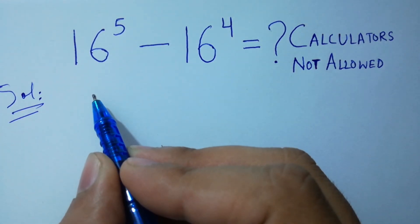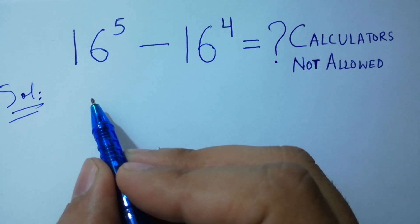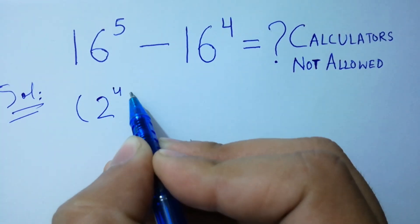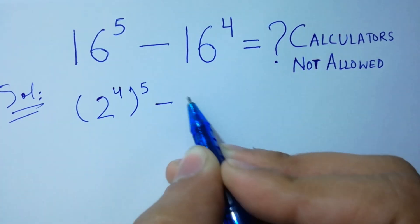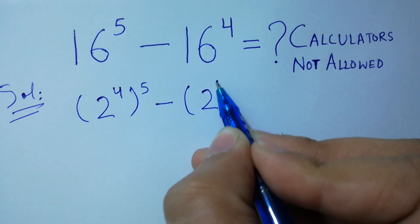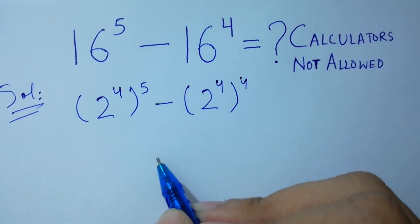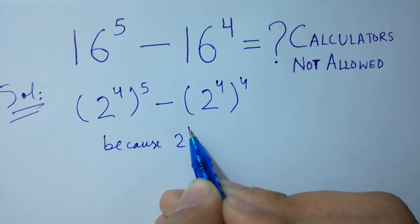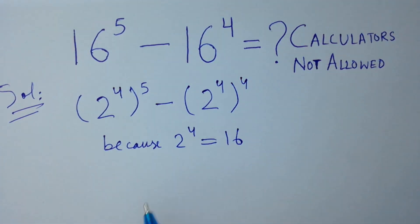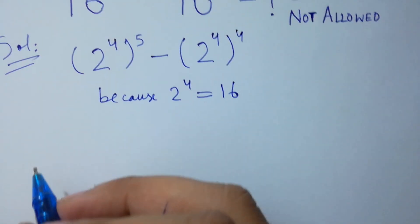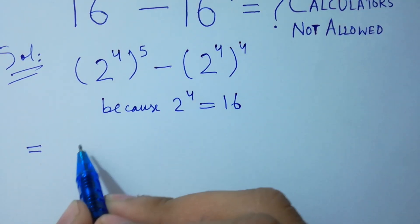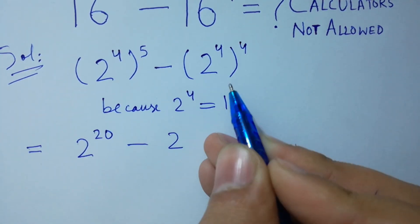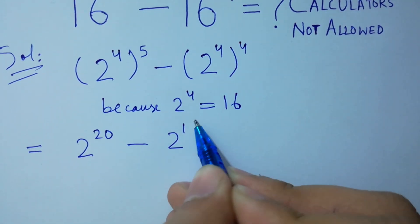Here, 16 to the power 5 minus 16 to the power 4 is the same as 2 to the power 4, to the whole power 5, minus 2 to the power 4, to the whole power 4, because 2 to the power 4 equals 16. So we get 2 to the power 20 minus 2 to the power 16. Clear?